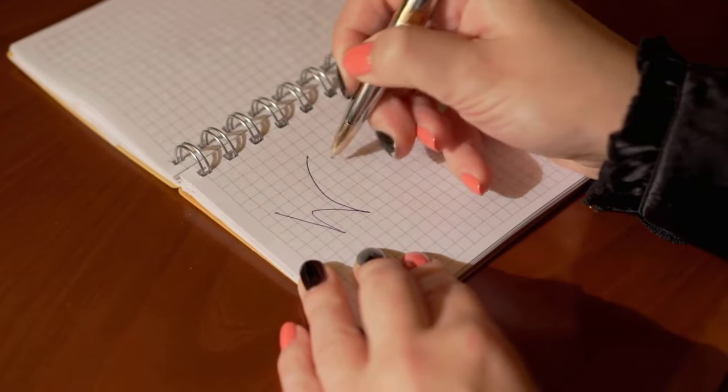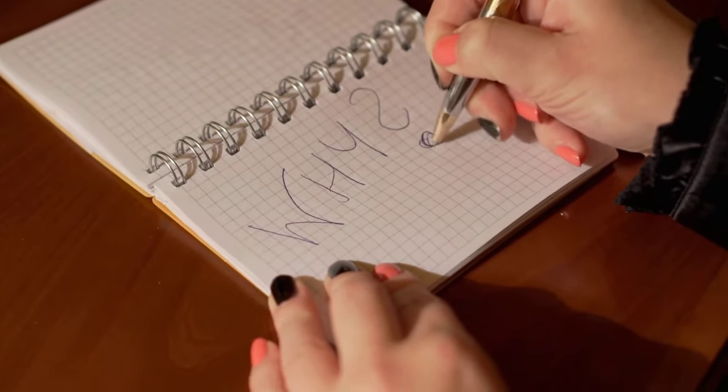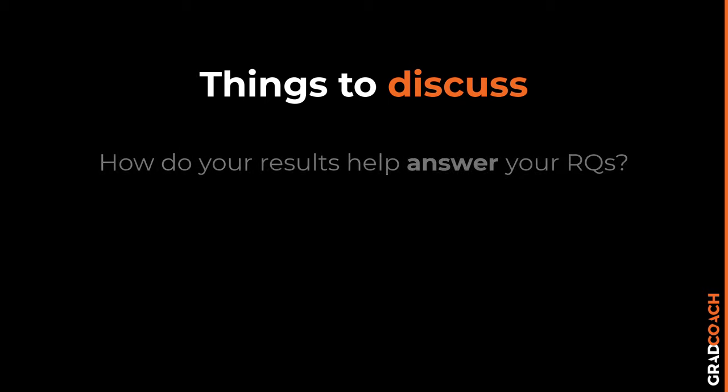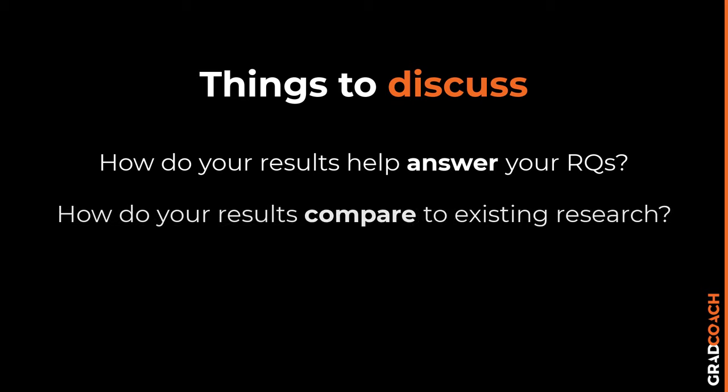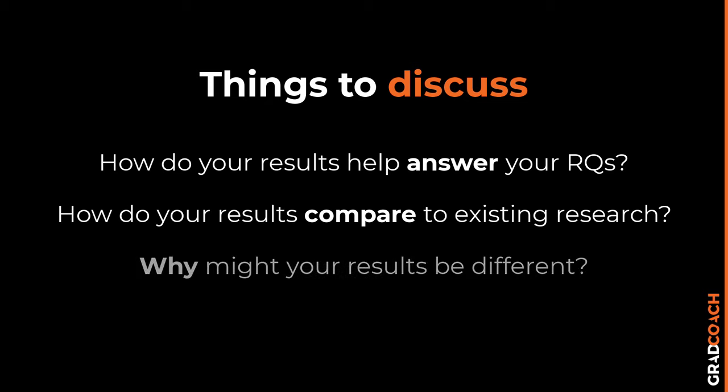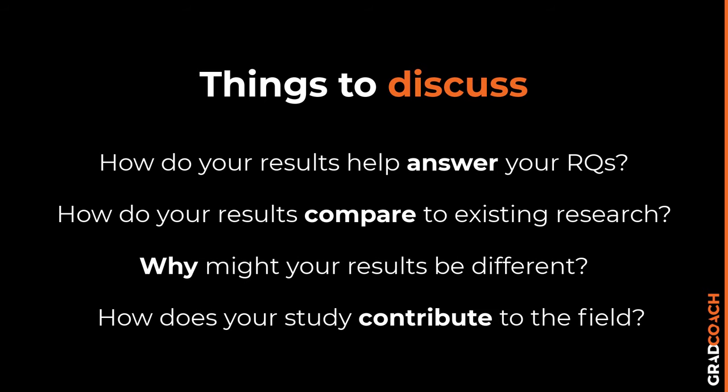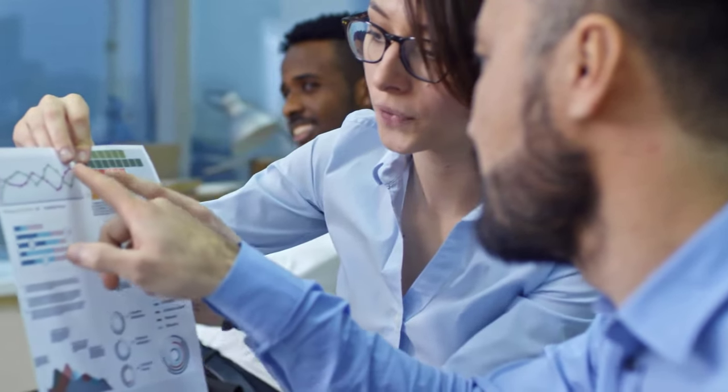In cases where your findings contrast with existing research, you will need to think about the potential reasons why you did not find what you were expecting and what the significance of this contrast is. Here are a few questions to address in your discussion chapter: How do your results help answer your research questions? How do your results compare to those of previous studies, and if they differ, why may this be the case? What do your results contribute to your field of research? When you interpret your findings, be careful not to draw conclusions that are not substantiated — every claim needs to be backed up with evidence from the data, whether that is interview quotes for qualitative studies or statistical analysis for quantitative studies.